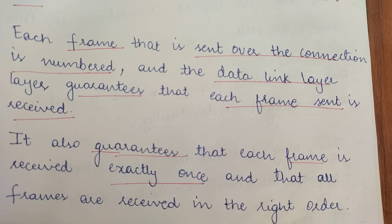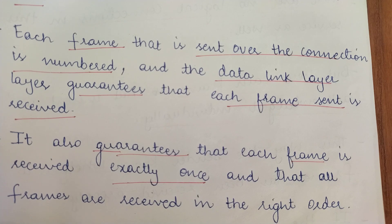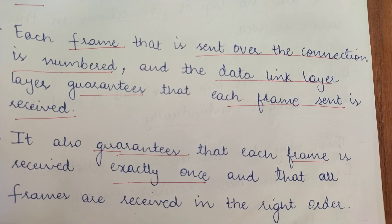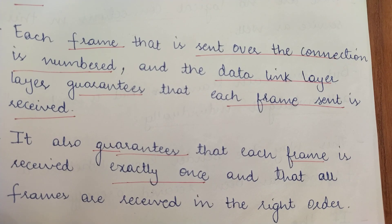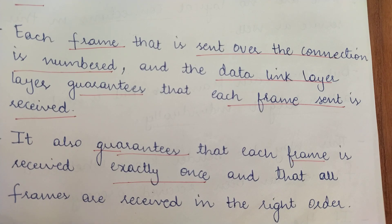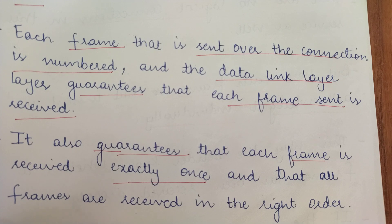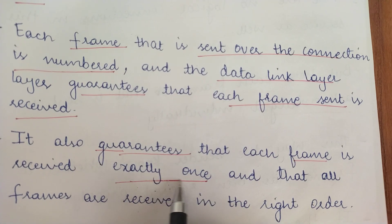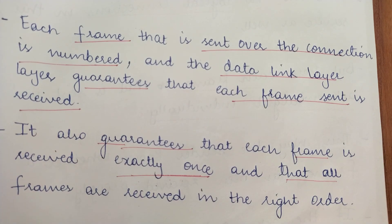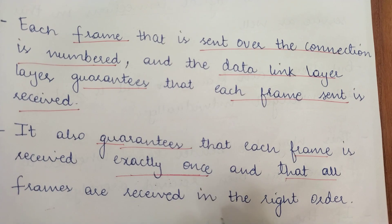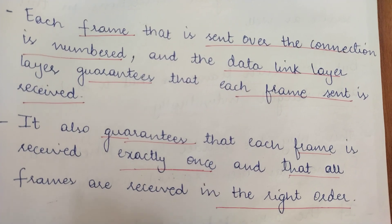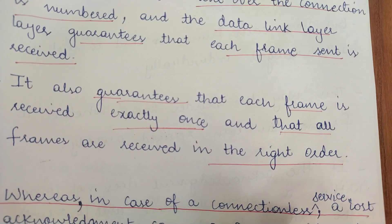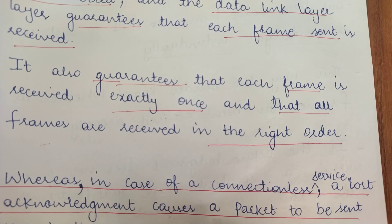In acknowledged connectionless service, duplicate frames could occur because if an acknowledgement was not coming within a specific time interval, the sender would assume the frame was not received and resend it. The acknowledgement may have arrived late, meaning the frame was already received, causing duplicate frames. But in connection-oriented service, the data link layer guarantees each frame is sent exactly once — no duplicate frames. Because of proper numbering of frames, it also ensures frames are received in the right order. In connectionless service, a lost acknowledgement causes a packet to be resent, hence causing duplicate frames.